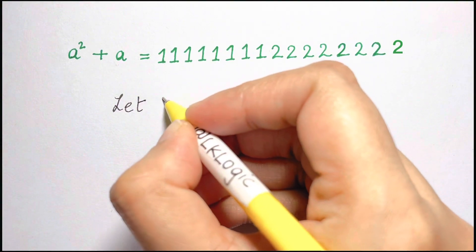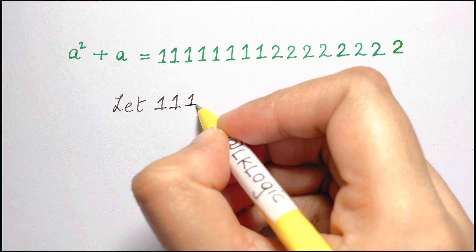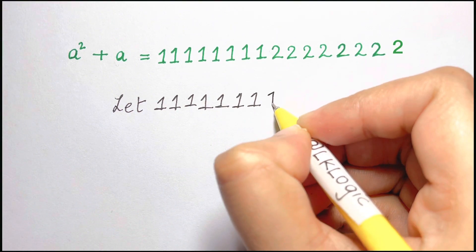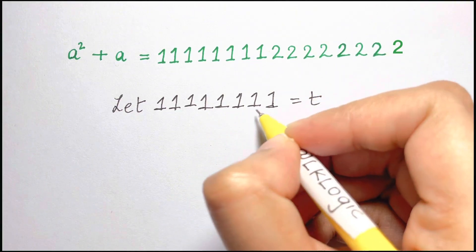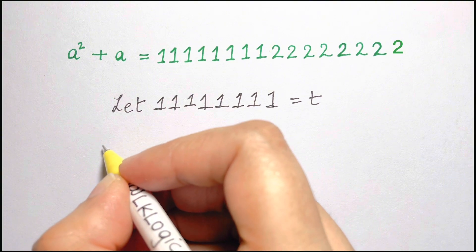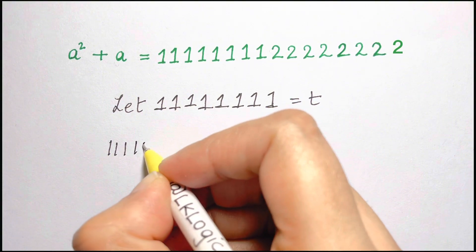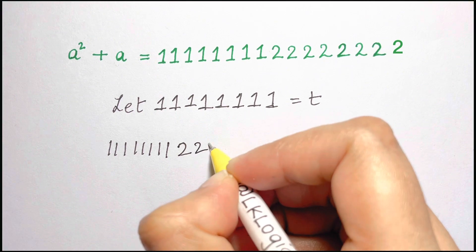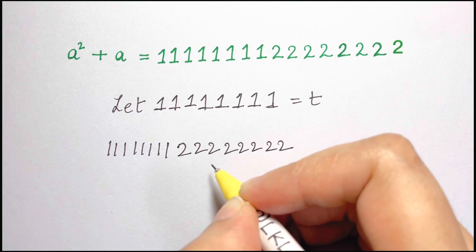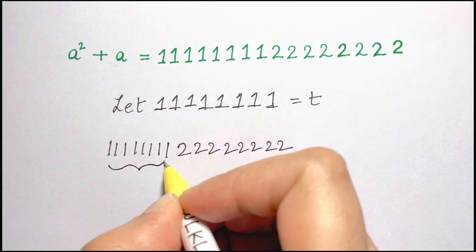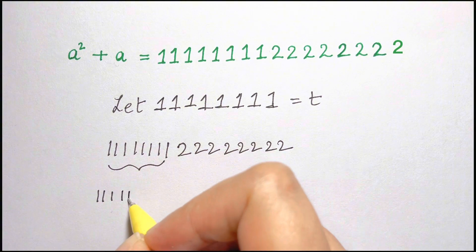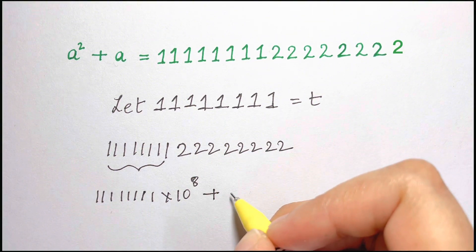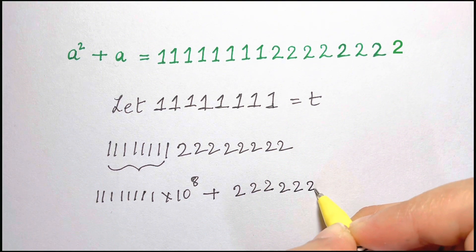So let 11111111 be equal to t. Now we're going to write this back: we have 1111111 and then 2222222. This can be written as 11111111 into 10 to the power of 8 plus 22222222.